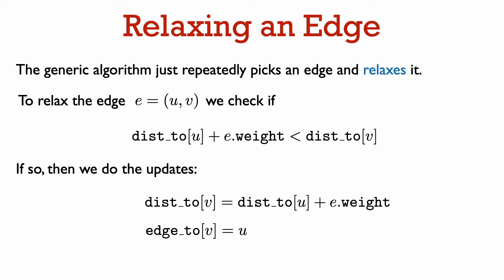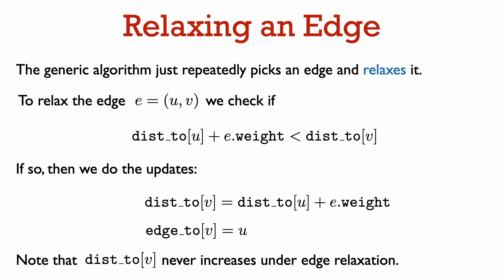The generic algorithm does the same basic operation over and over again — we call this operation relaxing an edge. The algorithm chooses an edge e from vertex u to vertex v, and checks if dis2[u] plus the weight of edge e is less than dis2[v]. If it is, the relax operation updates dis2[v] to be dis2[u] plus the weight of edge e, and also updates edge2[v] to be vertex u. We only do this update if the condition holds, so dis2[v] is never going to increase under edge relaxation.